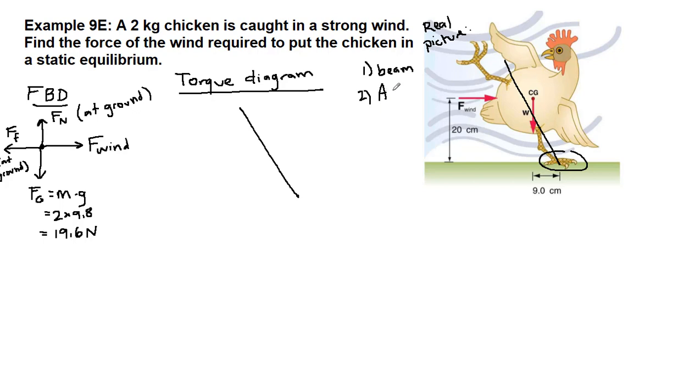The second step that we're always doing for our torque diagram is to choose an axis. Now, when we've talked about it in the previous examples, what I've commented on is that the easiest thing for our math is to choose to put the axis at a location where we have an unknown force. And if we look at our force diagram here, we know the force of gravity, we don't know the wind, but we also don't know friction or the normal force, and both of those aren't even asked for in the problem.